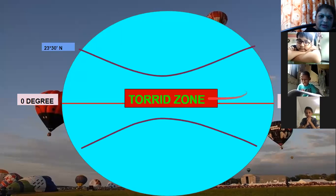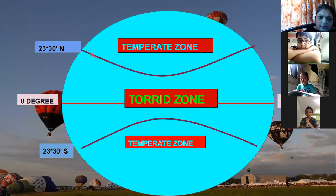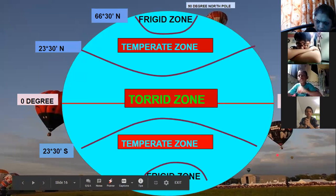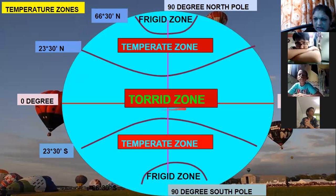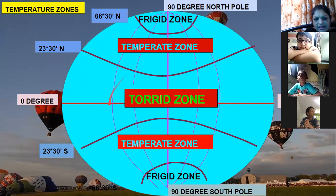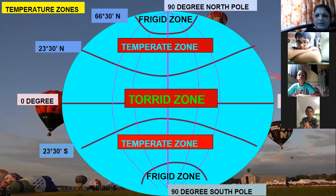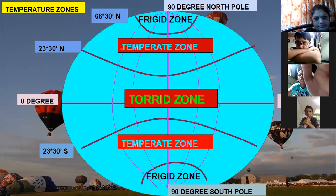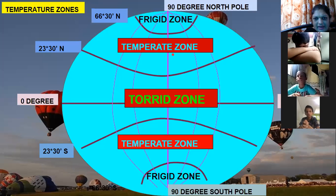The 23 degree 30 minutes line is the Tropic of Cancer, and 23 degree 30 minutes in the south is the Tropic of Capricorn. The equator is at 0 degrees. The rays of the sun are perpendicular in this area — meaning temperature is very, very high. So the torrid zone is formed here. In total, three zones are formed on the surface of the earth: the torrid zone, the temperate zone, and the frigid zone.